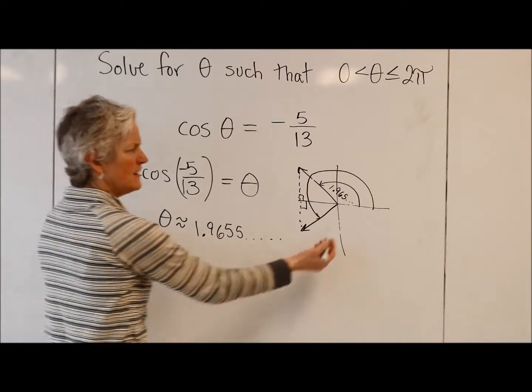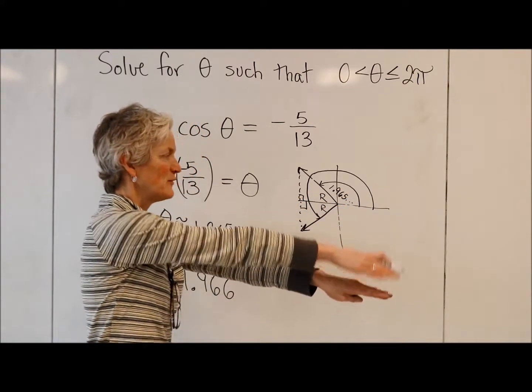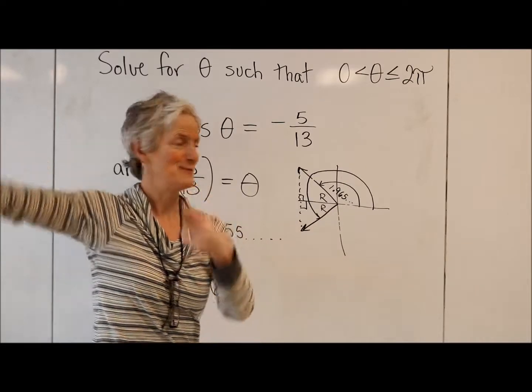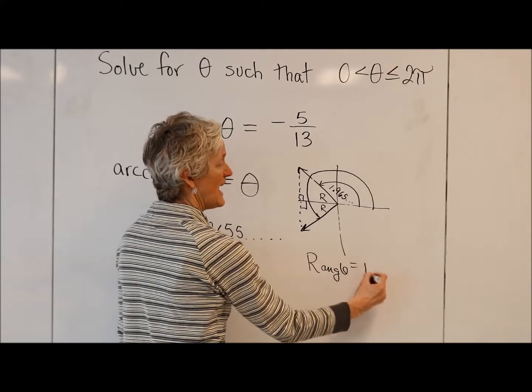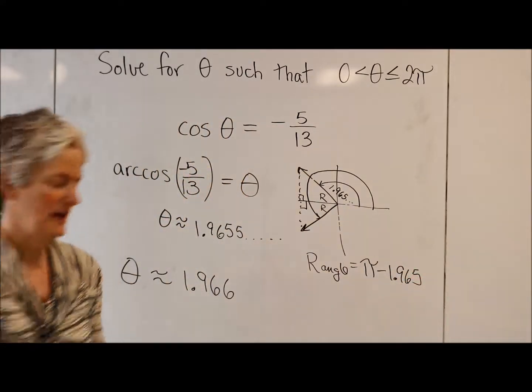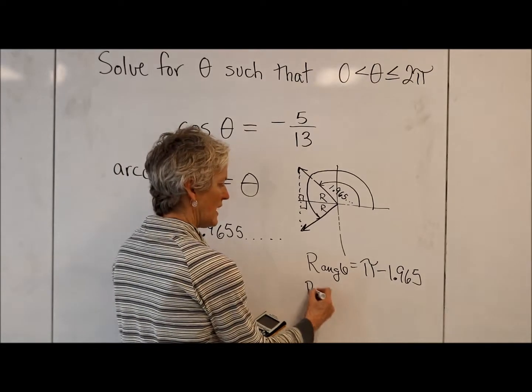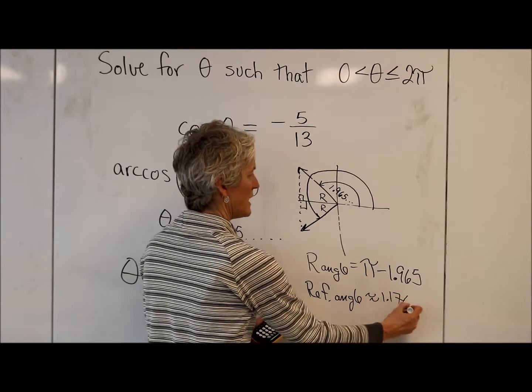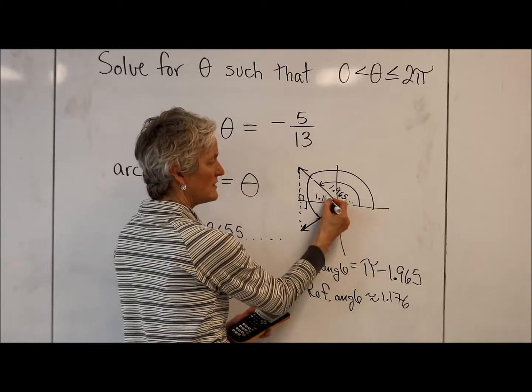Well, one way to do it is to say, oh, maybe I'll find my little reference angle. I think I could find my little reference angle and say, oh, it's just shy of pi. And that rhymes. I could find my reference angle by saying pi minus that 1.965. Well, let's ask our calculator. What pi minus that value is? So my reference angle is about 1.176.